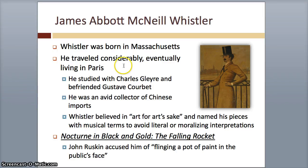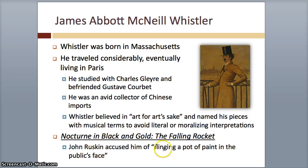Moving on to the next artwork — we have James Abbott McNeill Whistler. Whistler was born in Massachusetts and traveled considerably, eventually living in Paris. He studied with Gleyre and befriended Gustave Courbet. He was an avid collector of Chinese imports. He believed in art for art's sake and named his pieces with musical terms to avoid literal or moralizing interpretations. For example, he had one called Nocturne in Black and Gold: The Falling Rocket. He was critiqued by John Ruskin, who said that artwork wasn't that great. Whistler got mad and actually sued Ruskin for libel — for bad-mouthing him in public.